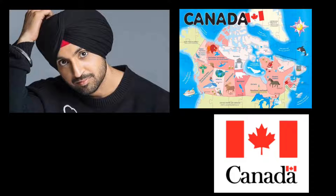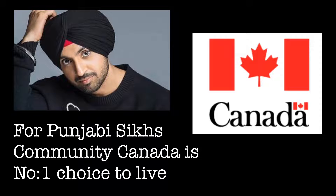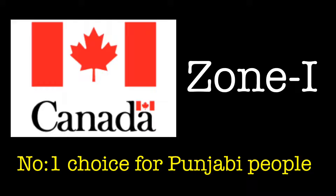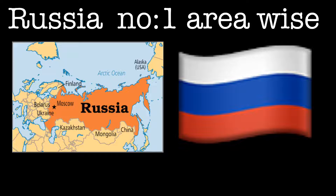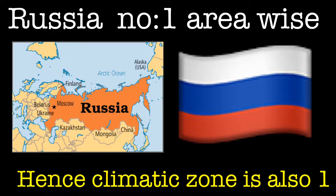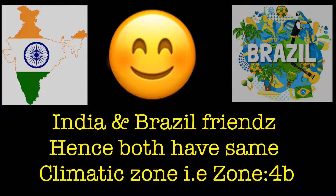After India, Canada has the highest Sikh community population, making it the number one destination for Sikhs — so Canada is Zone 1, the number one zone. Russia is the largest country in the world by area and is also number one, so its stability climatic zone is also Zone 1. India is in Zone 4, and India's good friend Brazil shares the same Zone 4.